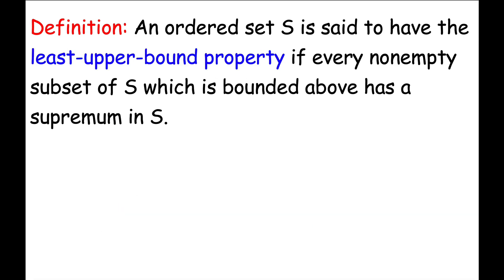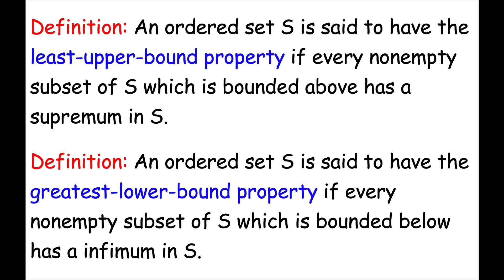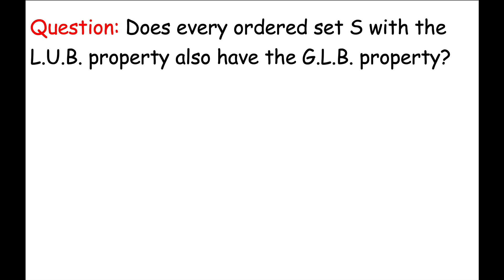As we work toward our look at the proof of Theorem 1.11 in Baby Rudin, a couple of definitions are in order. An ordered set S is said to have the least upper bound property if every non-empty subset of S which is bounded above has a supremum in S. The real numbers have the least upper bound property, but the set of rational numbers does not. Analogously, an ordered set S is said to have the greatest lower bound property if every non-empty subset of S which is bounded below has an infimum in S. The real numbers once again have the greatest lower bound property, whereas the rational numbers do not. A question we could then ask is: does every ordered set S with the least upper bound property also have the greatest lower bound property?